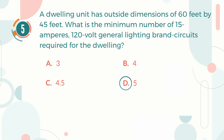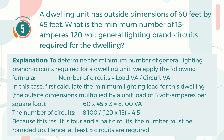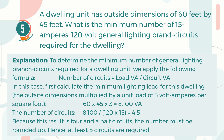The correct answer is D. 5. Explanation: To determine the minimum number of general lighting branch circuits required for a dwelling unit, we apply the formula: number of circuits equals the load in volt-amperes divided by the circuit in volt-amperes. First, calculate the minimum lighting load: outside dimensions multiplied by a unit load of 3 volt-amperes per square foot equals 8,100 volt-amperes. Number of circuits equals 8,100 divided by (120 × 15) equals 4.5. Because this result is 4 and a half circuits, the number must be rounded up. Hence, at least 5 circuits are required.